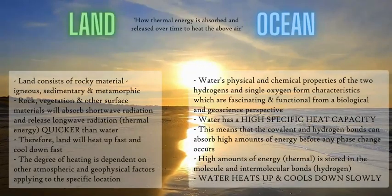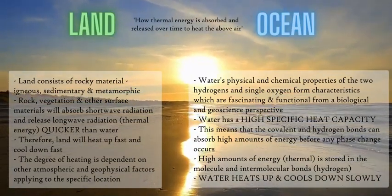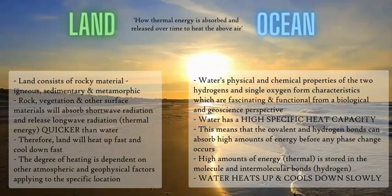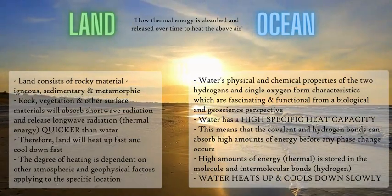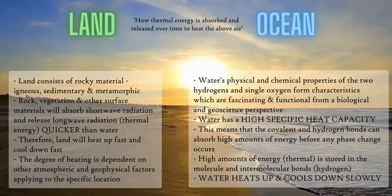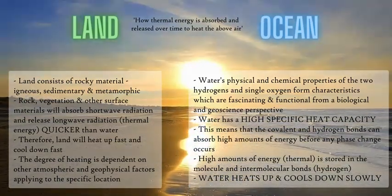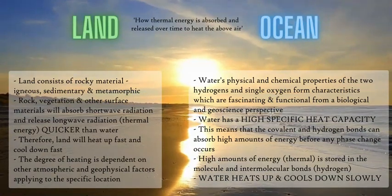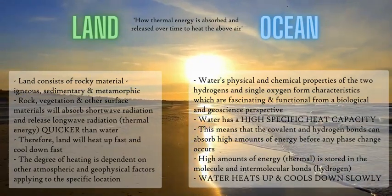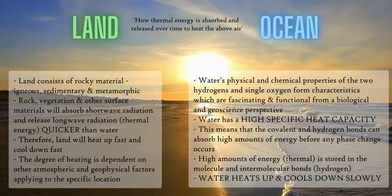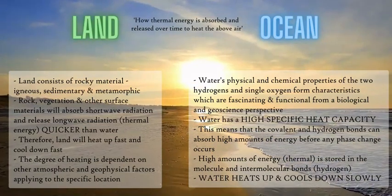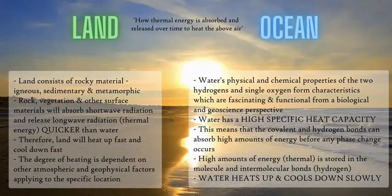Applying this to our coastline: the land and ocean have distinct differences in heat characteristics. Ocean saltwater has a much higher heat capacity than the rocks, minerals, and vegetation of the land. When the sun shines on the ocean, the water molecules can absorb more energy within their bonds than land can. As a result, the ocean maintains a very consistent temperature, taking a long time to heat up and a long time to cool down.